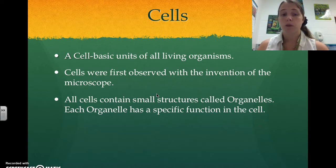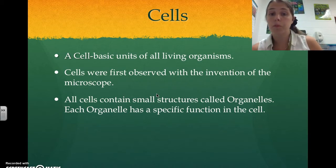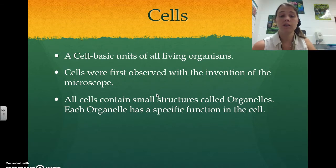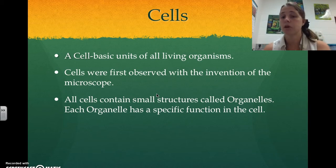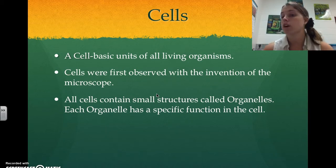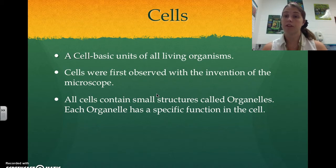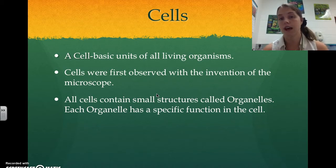Cells were first observed when we first started looking at microscopes. And as you are working on your timeline right now, you'll figure out when that actually was. All cells contain small structures called organelles. These are like organs of the cell, just like we have organs that do specific functions for our body. Cells have organelles that do specific functions for the cell.